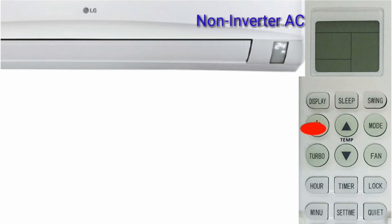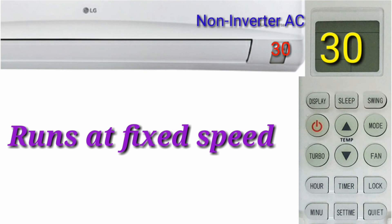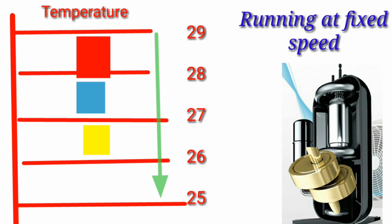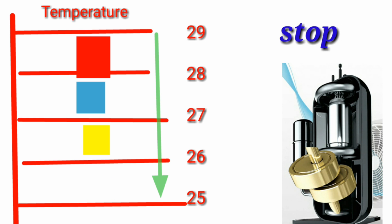Take a look at how the compressor runs in non-inverter AC. If you set 25 degrees on the AC, it runs at fixed speed and stops when it reaches the desired temperature. When it reaches 25, it stops.